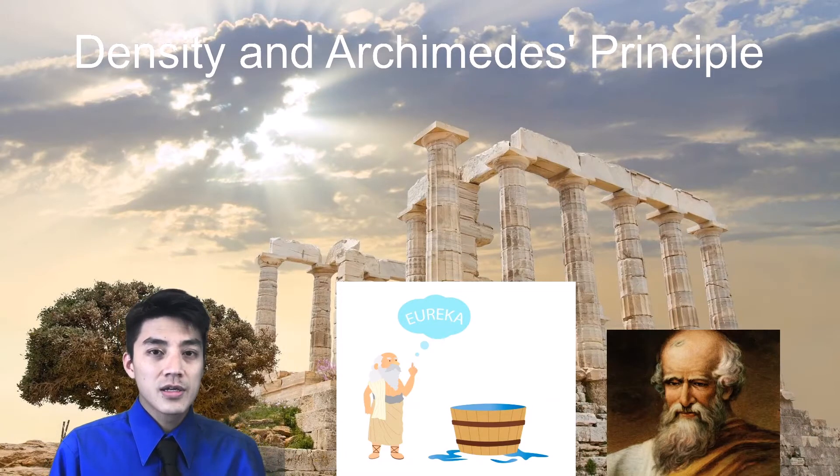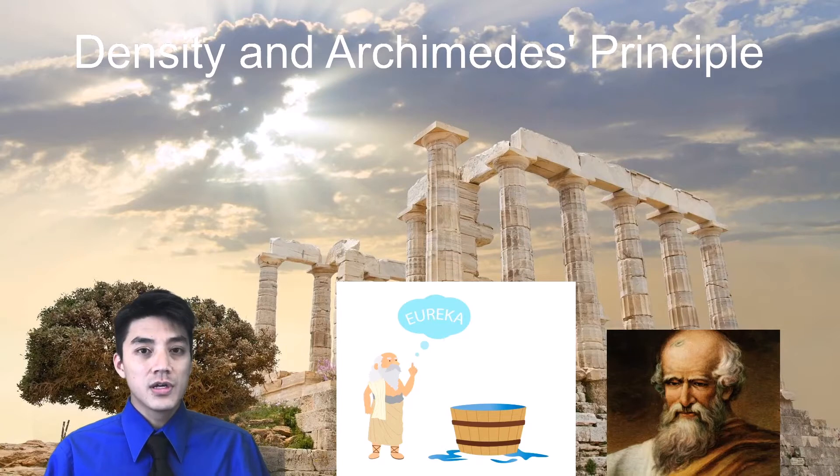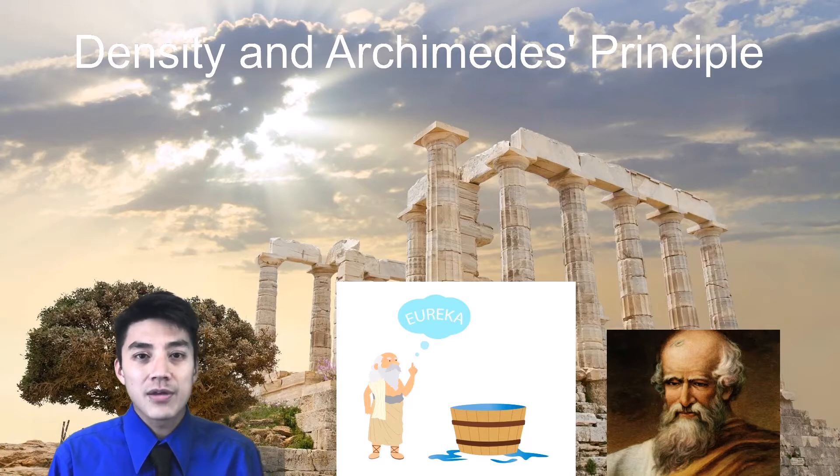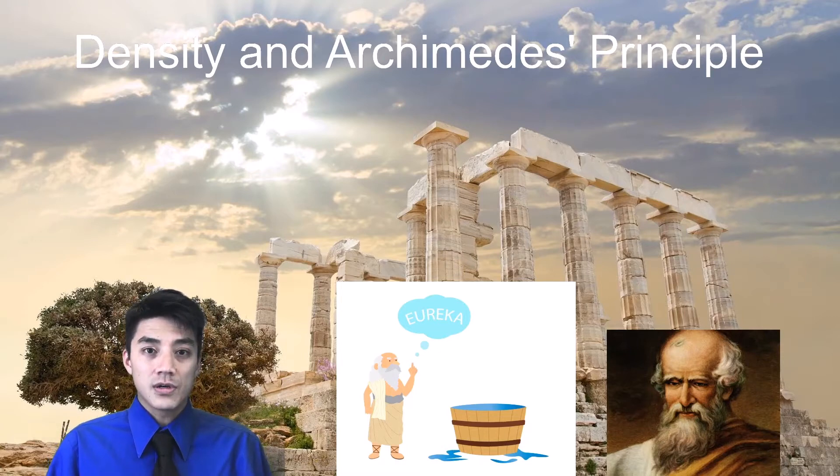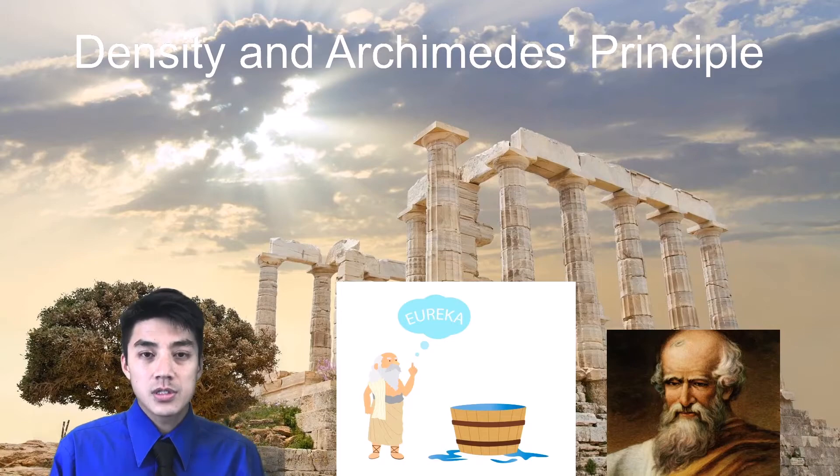So the legend goes, one day, Archimedes was sitting in a bathtub, and as the water overflowed, he had a revelation and cried, Eureka, which is Greek for I found it, as he ran through the streets naked. What he had determined was that the volume of water that had overflowed or had been displaced was equal or proportional to the volume of the crown.